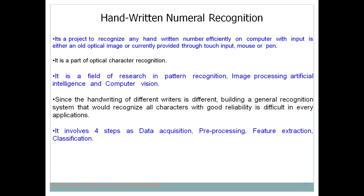Handwritten numeral recognition involves four steps: data acquisition, pre-processing, feature extraction, and classification. In data acquisition, you need to acquire the data — you provide a dataset of different handwritten digit images so the model can train. We have digits ranging from 0 to 9, and using these digits we can form any number.